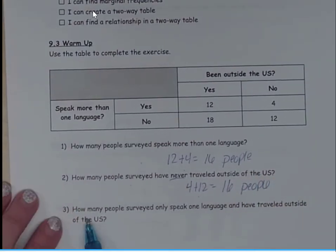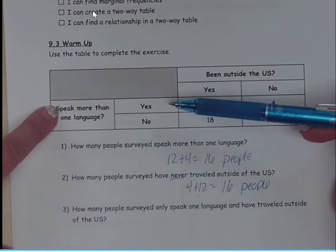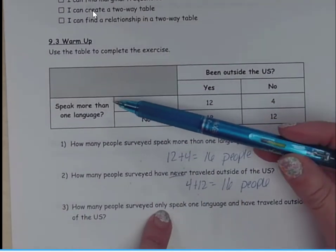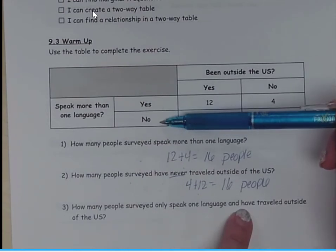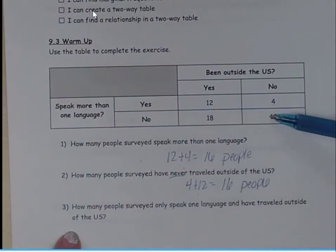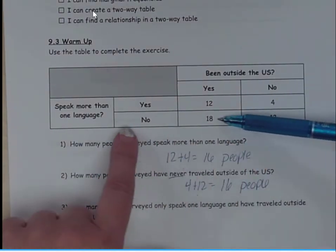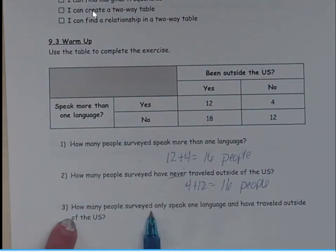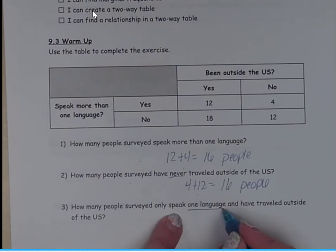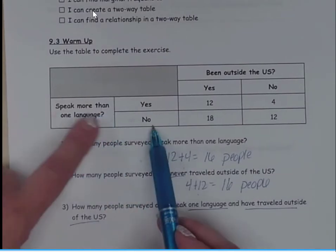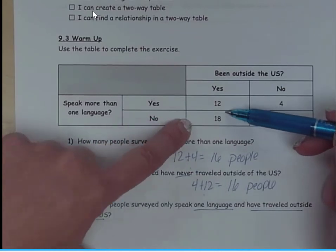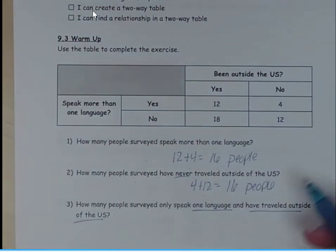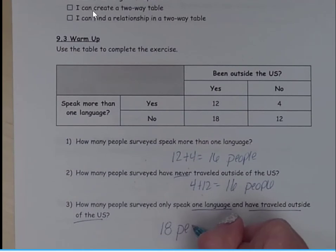Now my last question, how many people surveyed speak only one language and have traveled outside the US? So I'm looking for how many people speak one language and have traveled outside the US? 18 people.